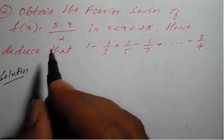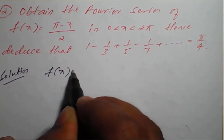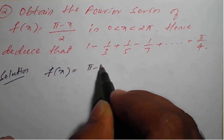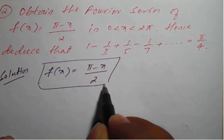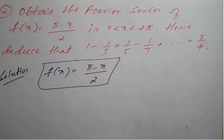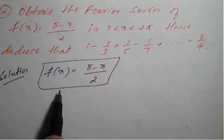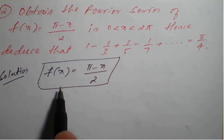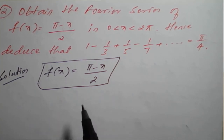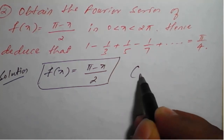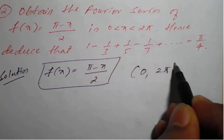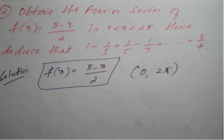First, the given function is f(x) = (π - x)/2. We need to find the Fourier series of this given function. Let me check first whether the given function is even, odd, or neither even nor odd. It is defined on the interval 0 to 2π.